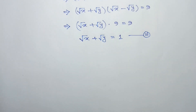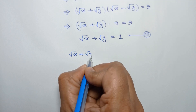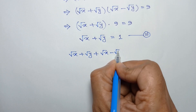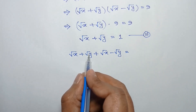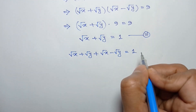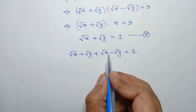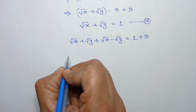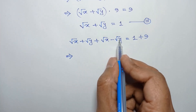Now, adding equation 1 and equation 3, we can write: square root of x plus square root of y, plus square root of x minus square root of y. From equation 1, square root of x plus square root of y is 9, and from equation 3, square root of x minus square root of y is 1.